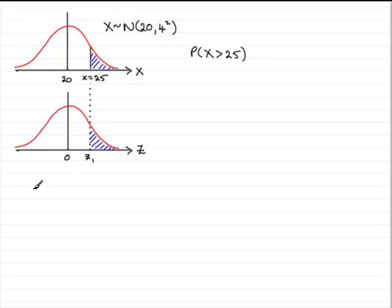Remember you can work out any z value using z equals the observed value minus the mean μ. In this example the mean μ is 20, and it's all divided by the standard deviation σ.